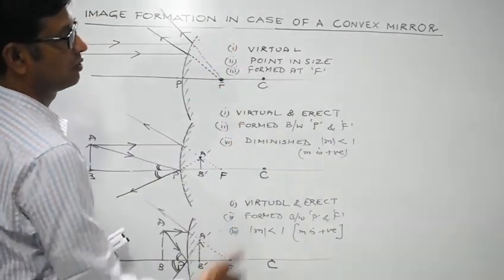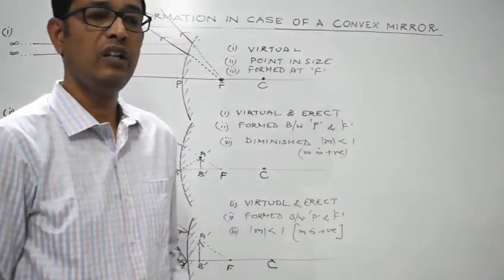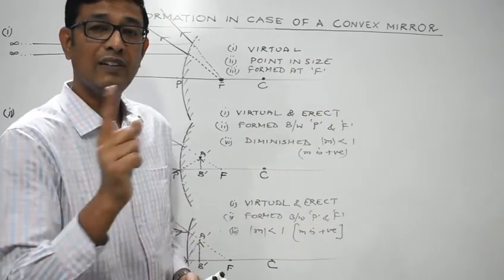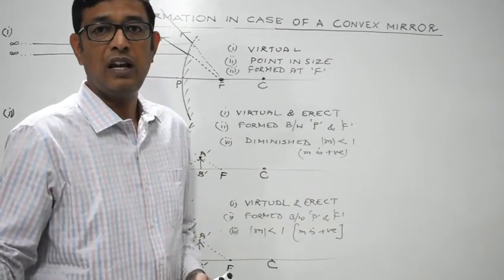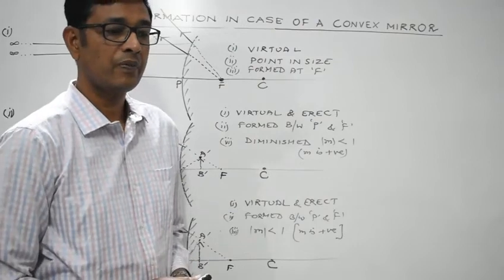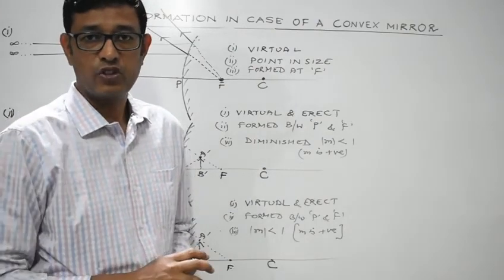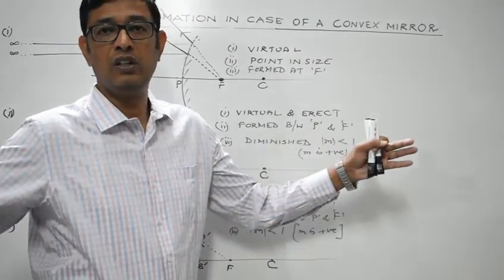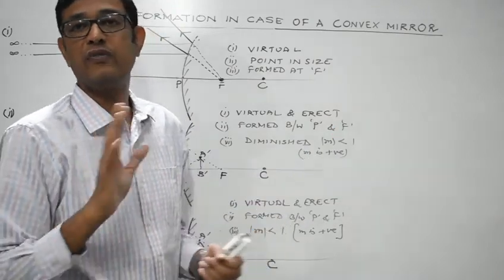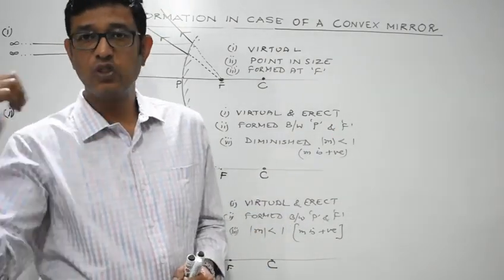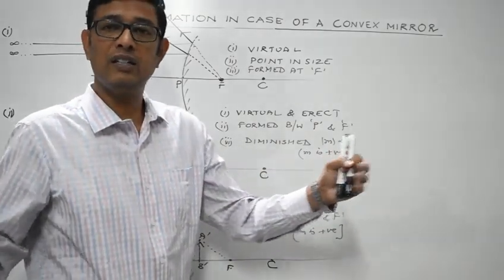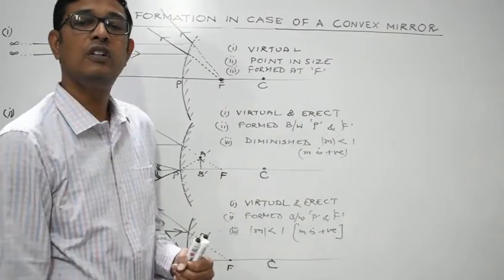A practical application of the convex mirror is the rear-view mirror used in vehicles — two-wheelers, three-wheelers, or four-wheelers. The rear-view mirror is of diverging nature, that is, it is a convex mirror. This is because it gives an erect image of the object, and since the image is diminished it covers a wider area, providing a wider field of view. However, it does not represent the correct distance of objects, so caution is needed.